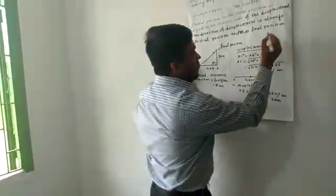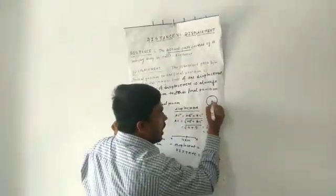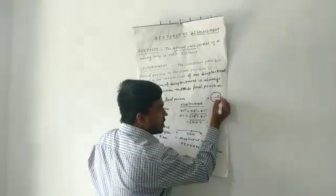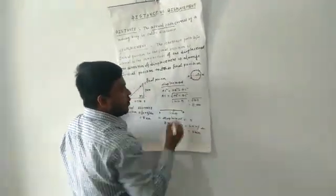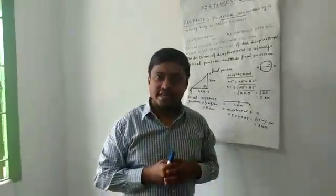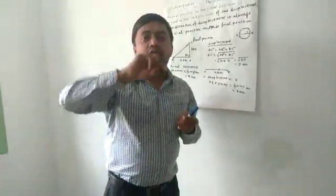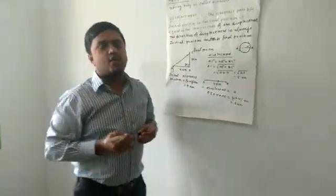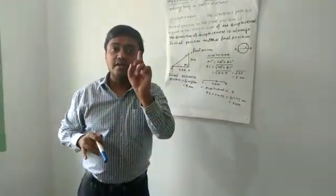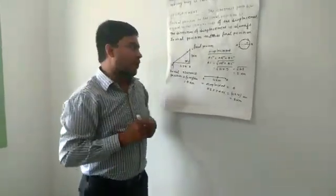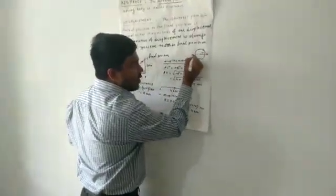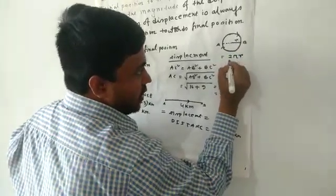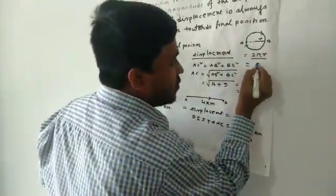Another example: suppose this is a circular path with radius r. A particle starts at point A, reaches point B, and then comes back to point A. What is the value of distance and displacement due to one complete revolution? Distance means the actual path covered by the body — initially the particle is at point A and returns to point A, so the distance equals the circumference of the circular path: 2πr. And since the body comes back to the same position, displacement will be zero.